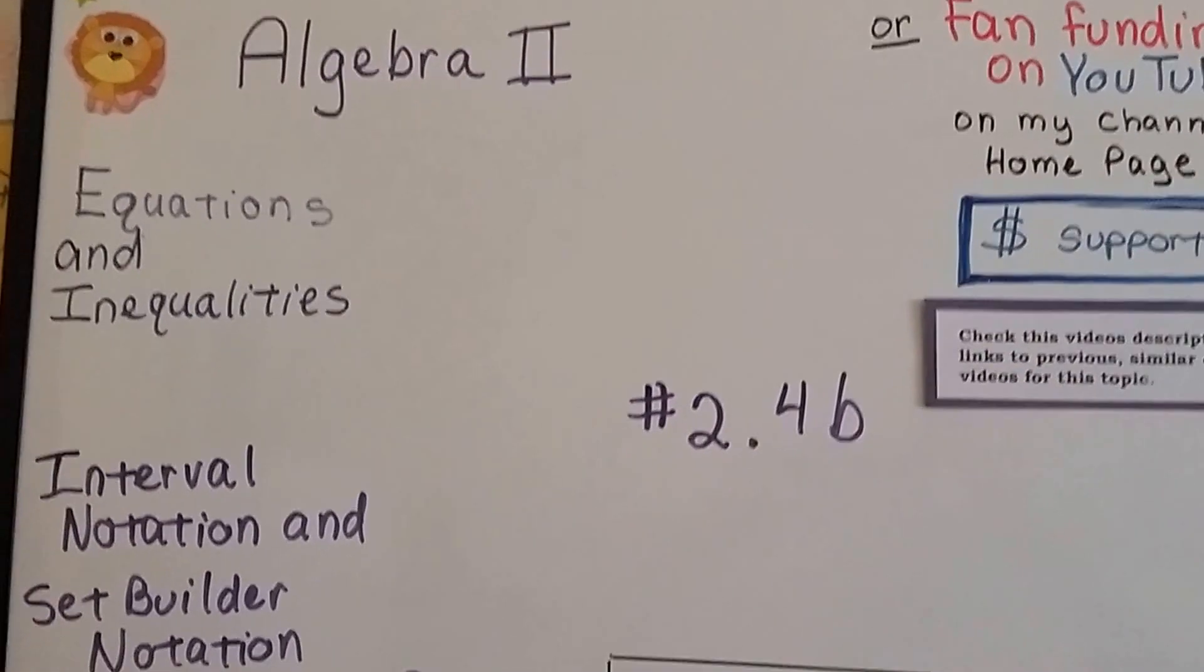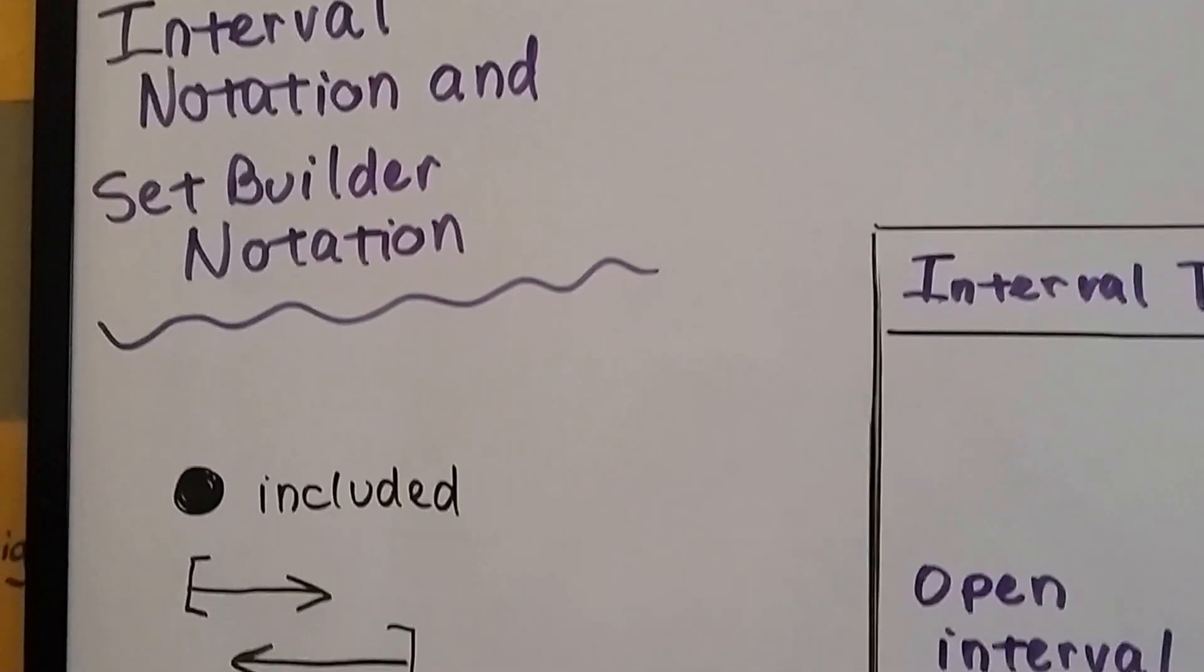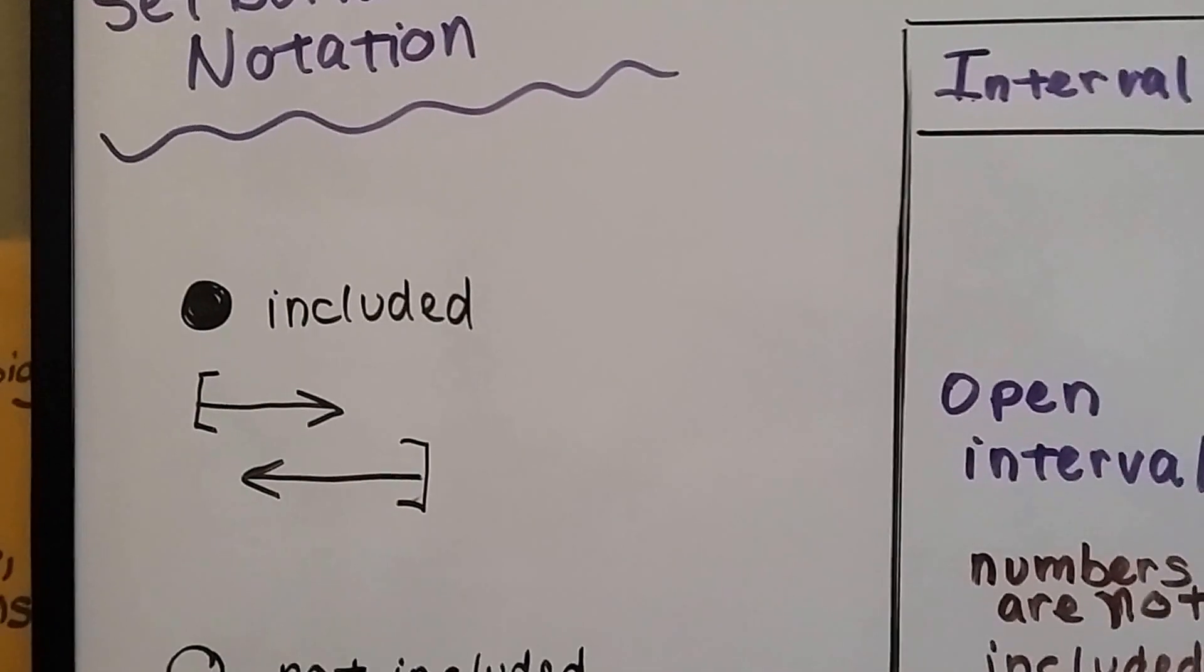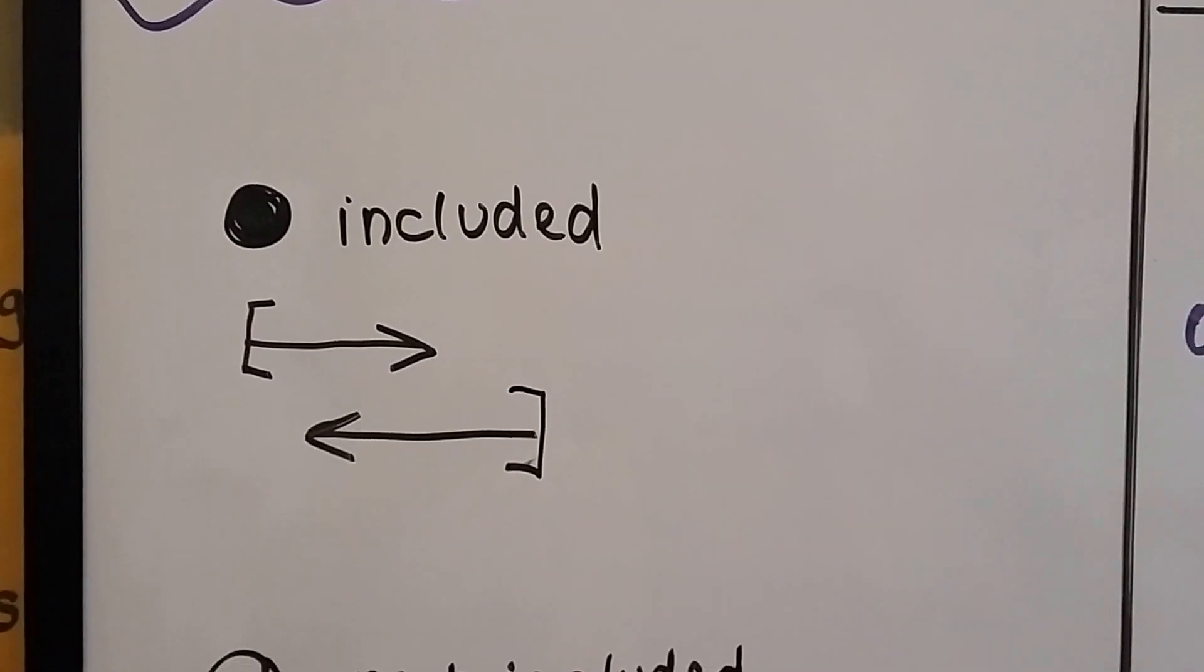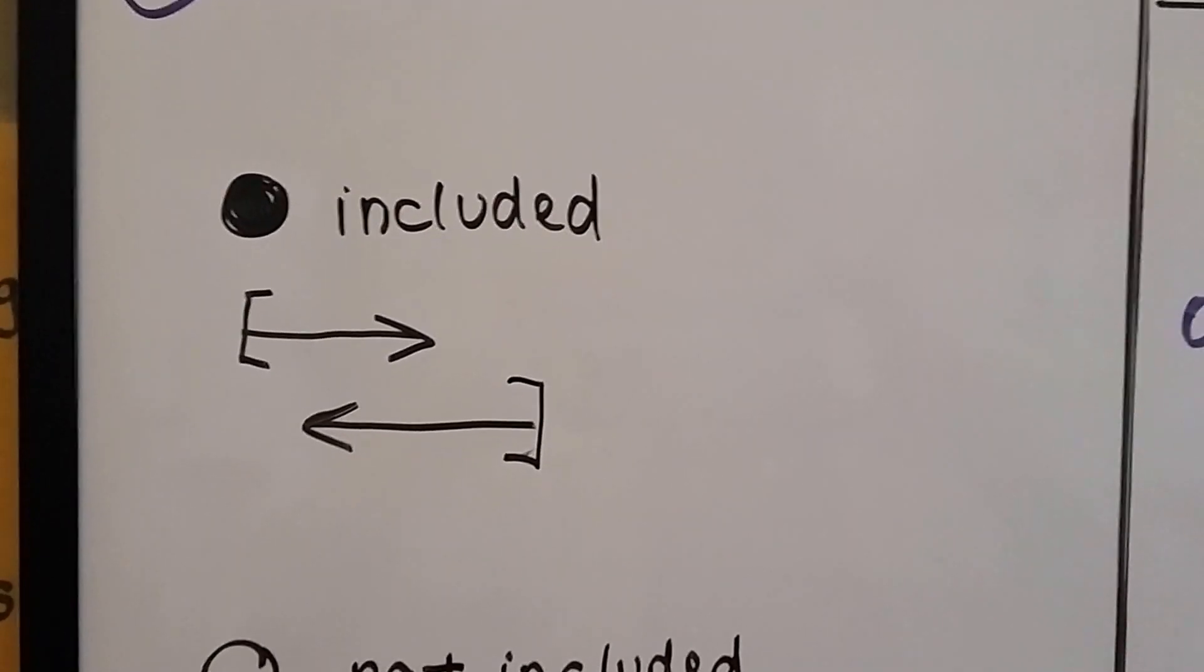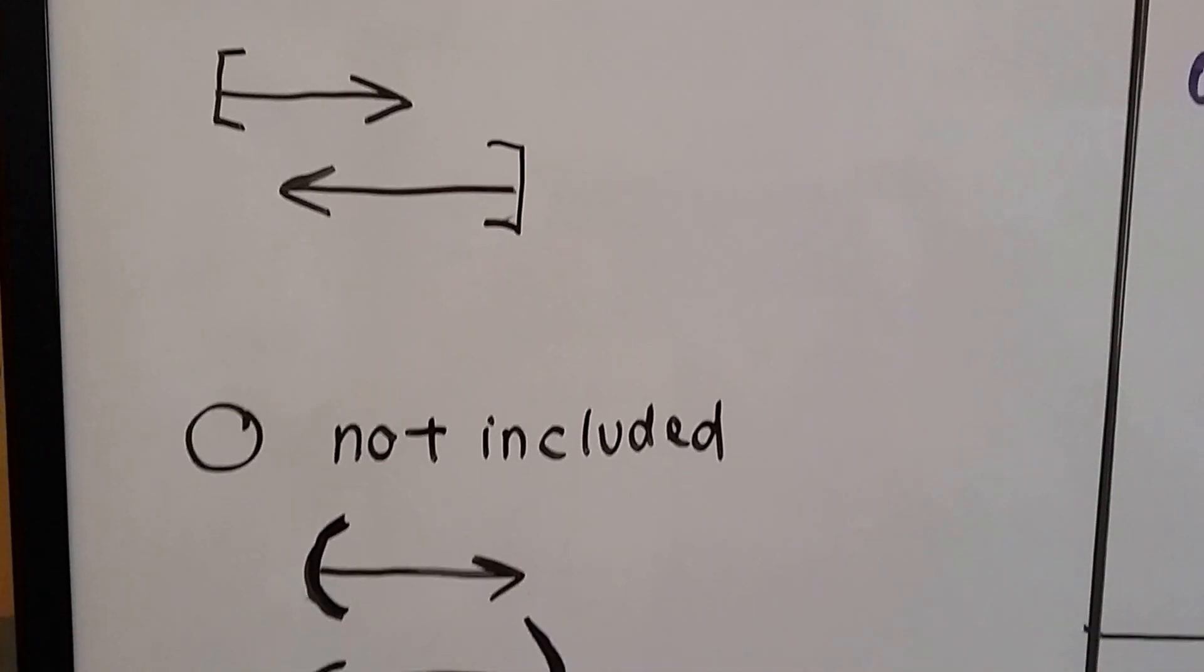Algebra 2, 2.4b, Interval Notation and Set Builder Notation. We talked about in the last video how if we're graphing solutions for an inequality on a number line, the filled-in dot means it's included. Or we could use a bracket with an arrow pointing to the direction of the interval, the solutions that are included.